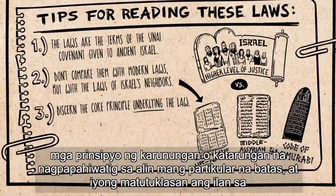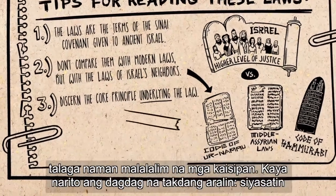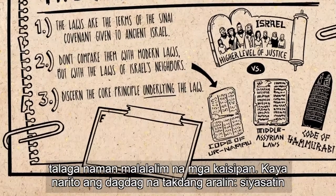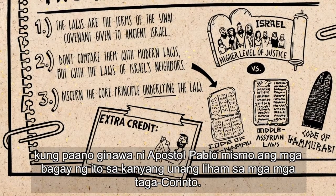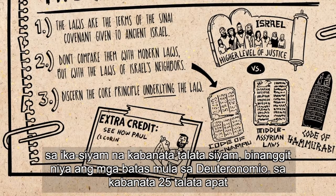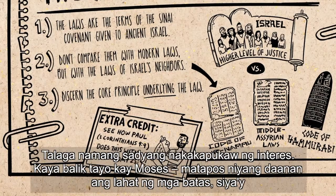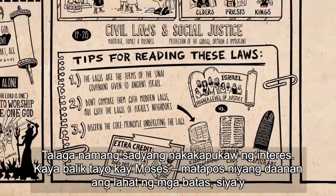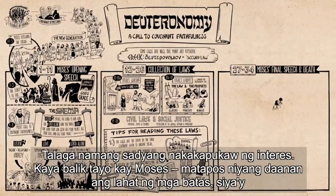Try to discern what core principles of wisdom or justice underlie any particular law, and you will discover some really profound things. Here is an extra credit assignment: go see how Paul the apostle does this very thing in his first letter to the Corinthians, chapter 9, verse 9, where he quotes a law from Deuteronomy, chapter 25, verse 4. It is really interesting. So back to Moses.